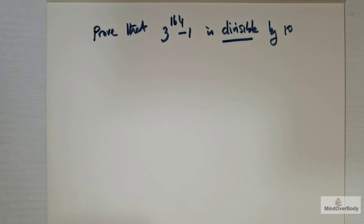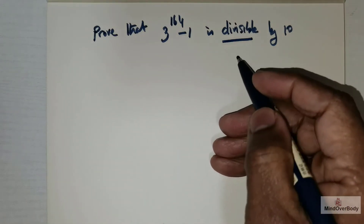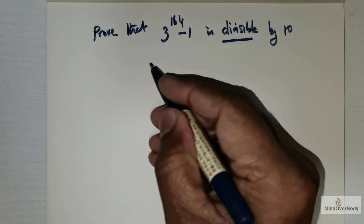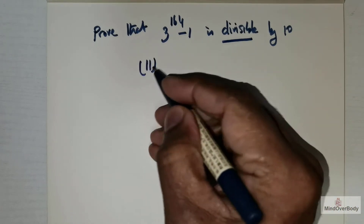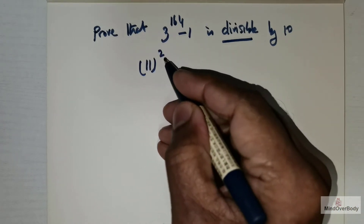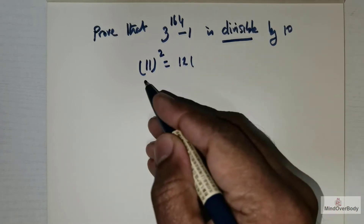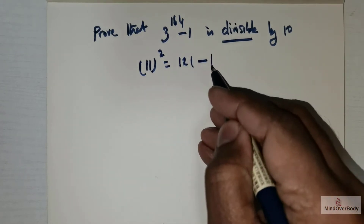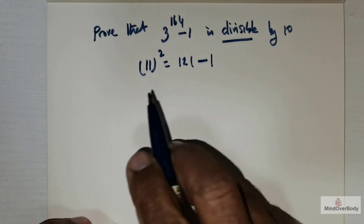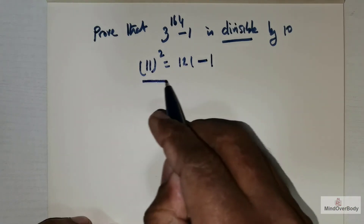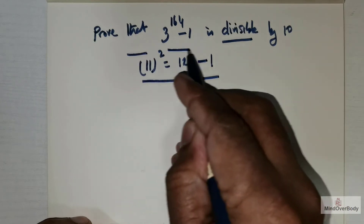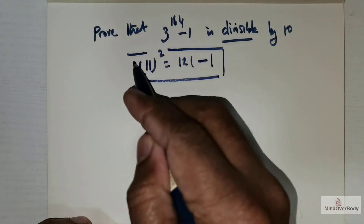When exactly can a number be divisible by 10? It has to end in zero — that is the natural phenomenon. For example, if you take 11 and square it, you get 121. This can become divisible by 10 if I were to remove that one off.